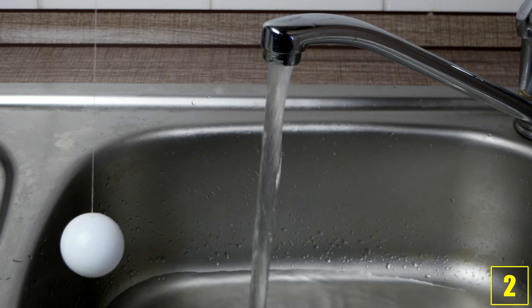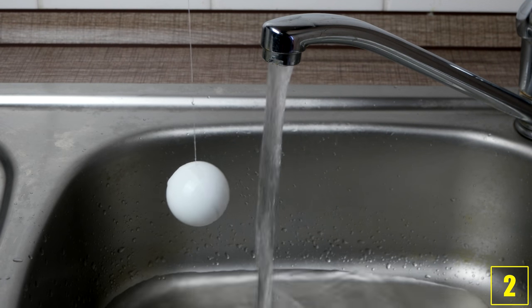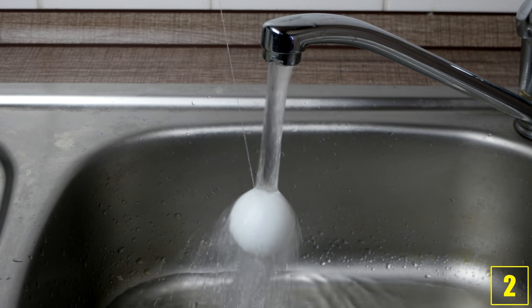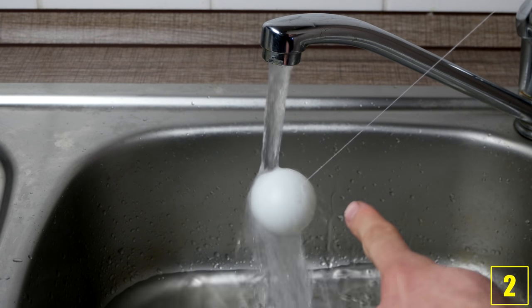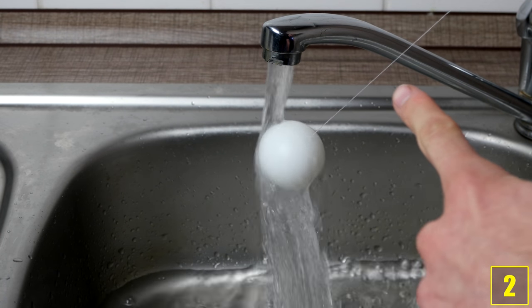And number 2. If you hold a table tennis ball on a thread close to a water jet, it'll be pulled into the jet. The crazy thing is, even if you hold a thread like this and slightly pull on it, the table tennis ball will remain in the water jet.